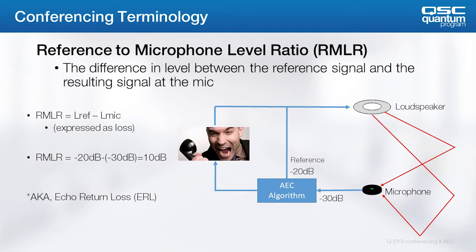In this example, the level of the reference is negative 20 decibels, while the resultant level at the microphone is negative 30 decibels. The difference, or RMLR in this case, is 10 decibels. To get the best performance from the algorithm, our goal is to calibrate the block to achieve an RMLR of zero. Later, we'll see how to make this adjustment.